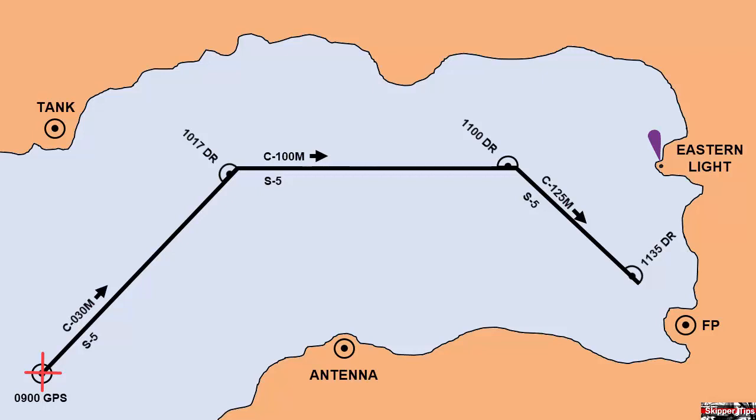Now as you sail, two things will be of primary interest: how far you advance along the track, and whether you are right or left of track. To find your advance along a track, use prominent objects off the beam or close to the beam.